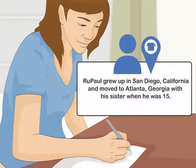Talk about the location of the person's childhood. Discuss where the person grew up. Mention any key moves to other cities or countries during the person's childhood. For example, you may write: RuPaul grew up in San Diego, California and moved to Atlanta, Georgia with his sister when he was 15.